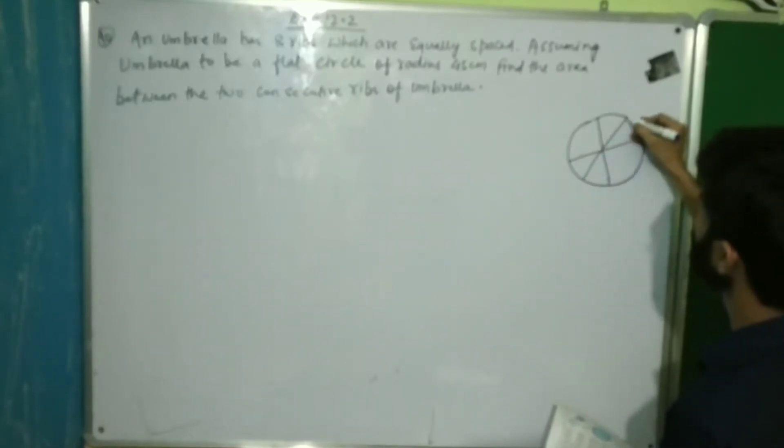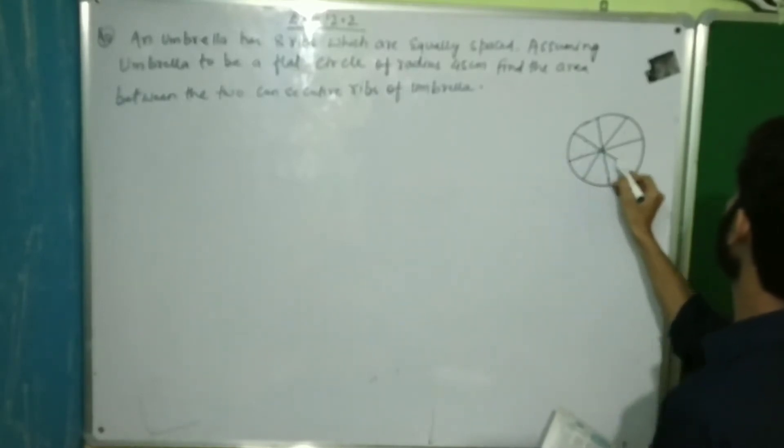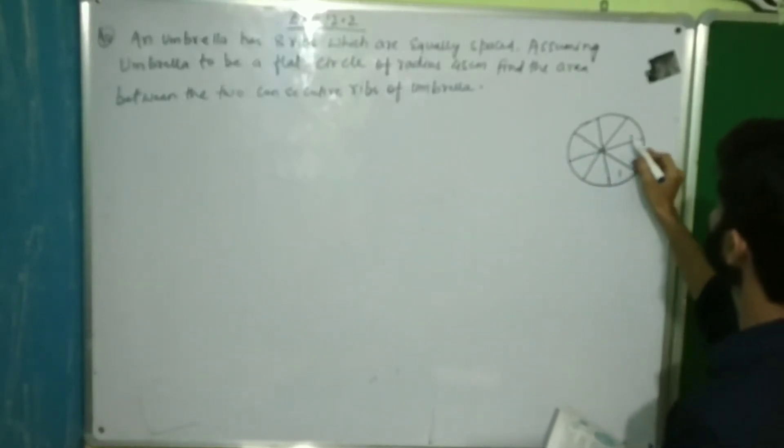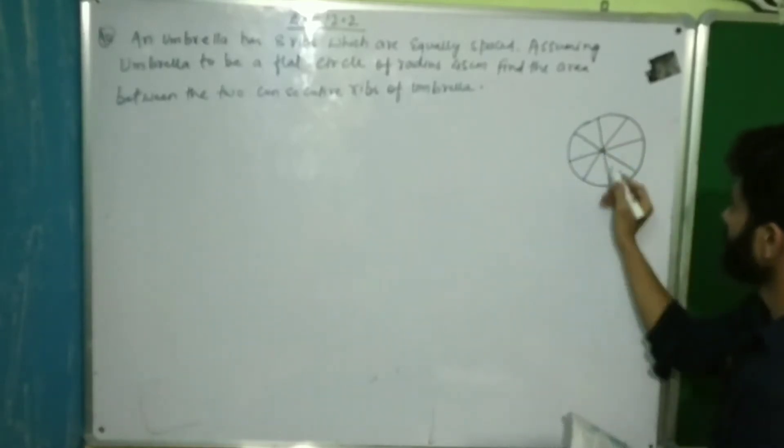I'm going to mark here. How many? 1, 2, 3, 4, 5, 6, now it's okay. 1, 2, 3, 4, 5, 6, 7, 8, okay?